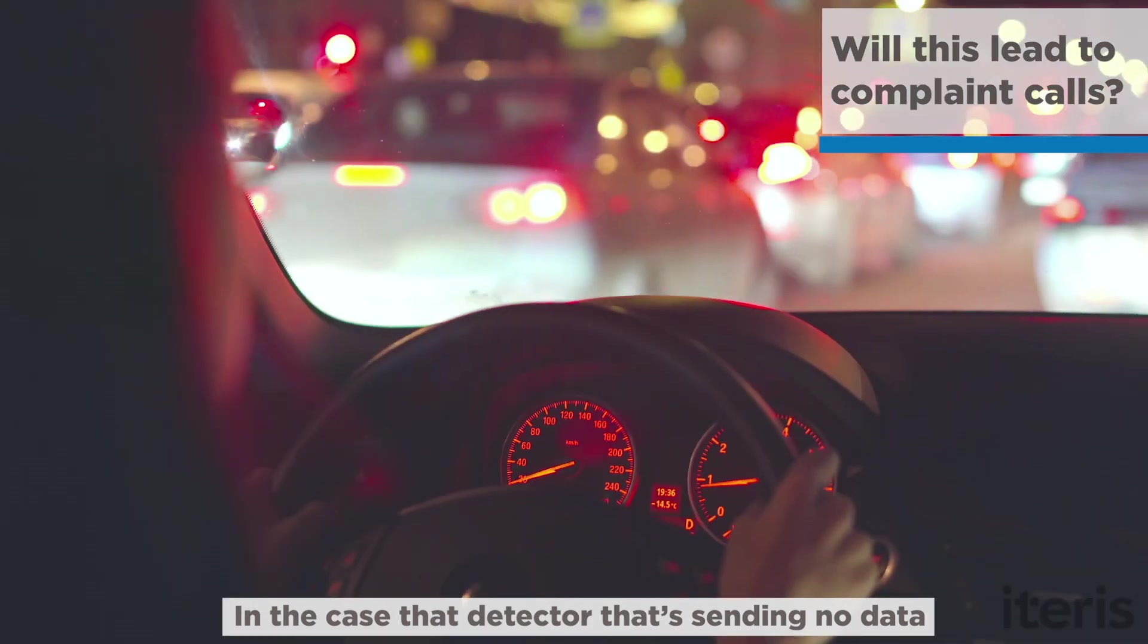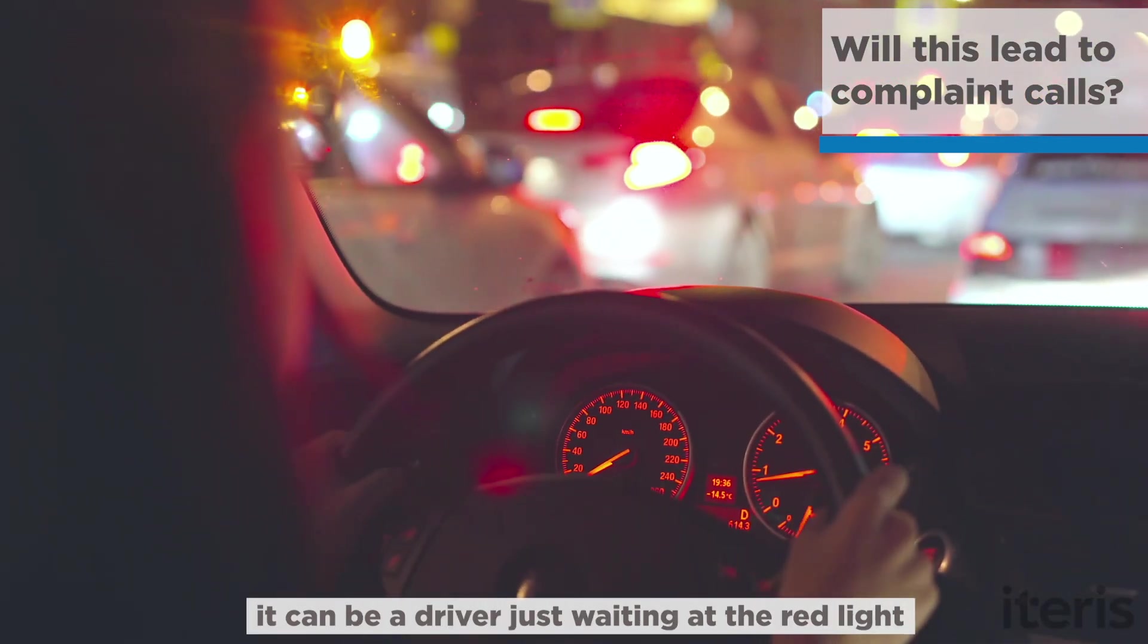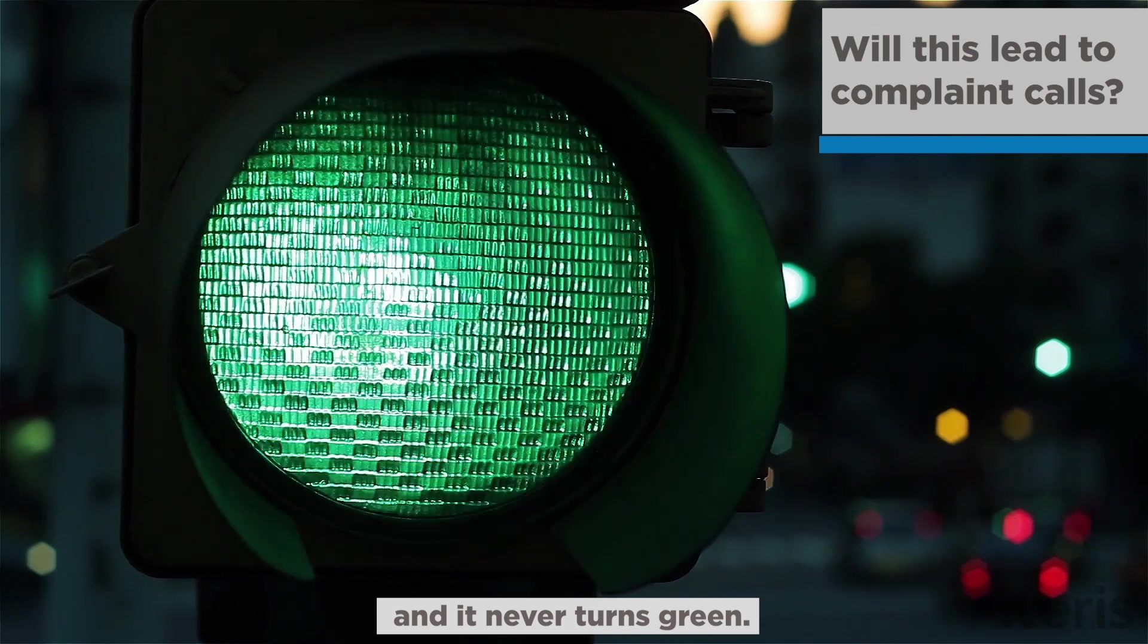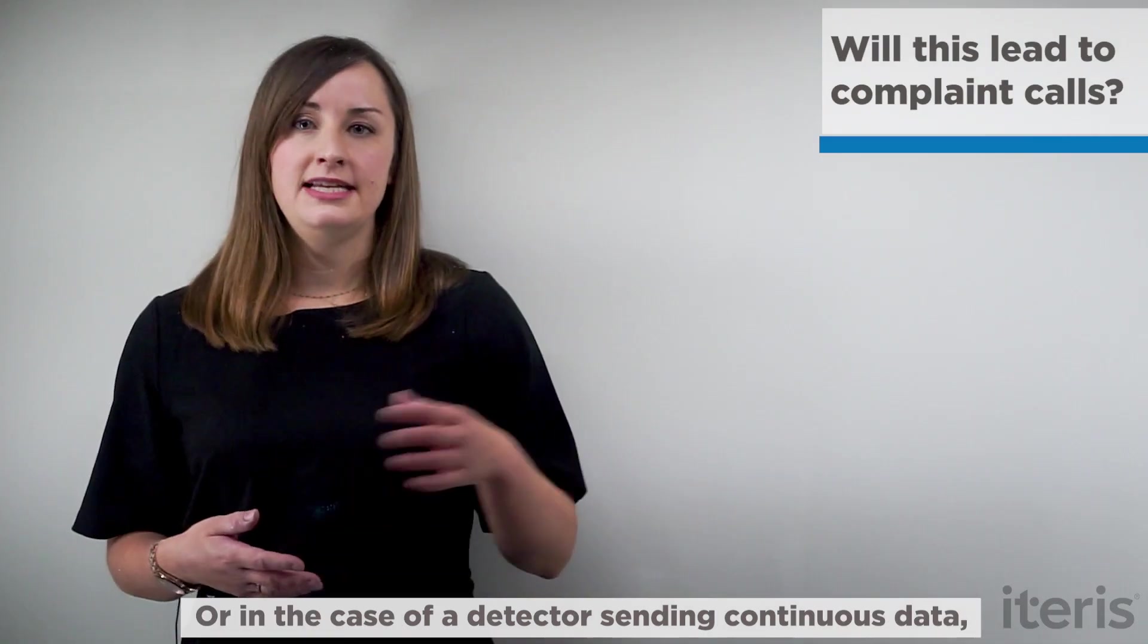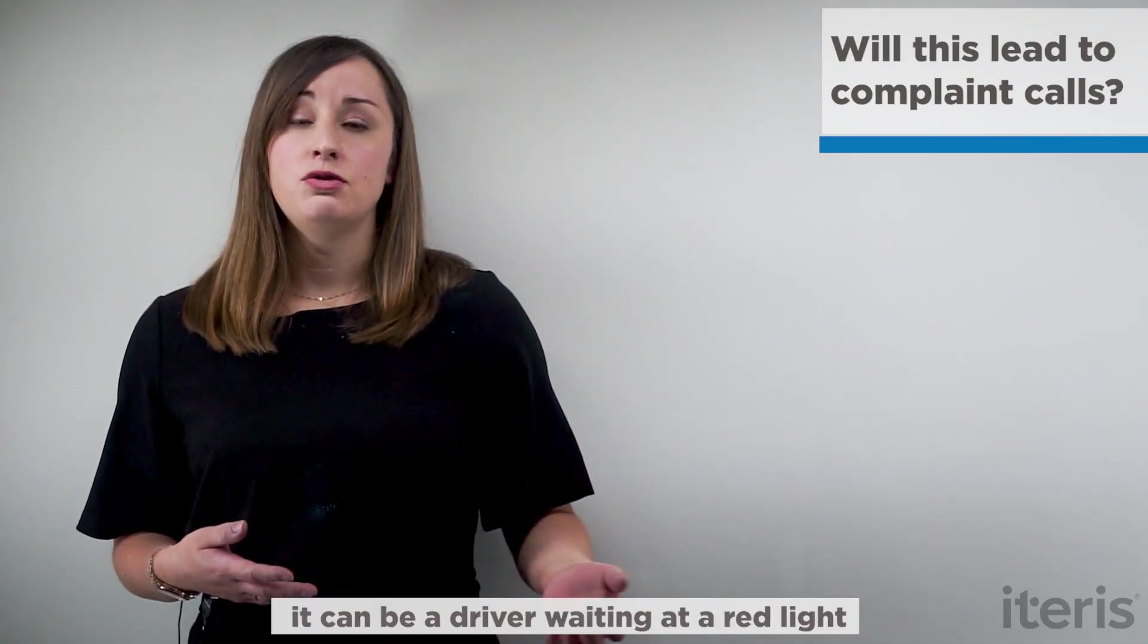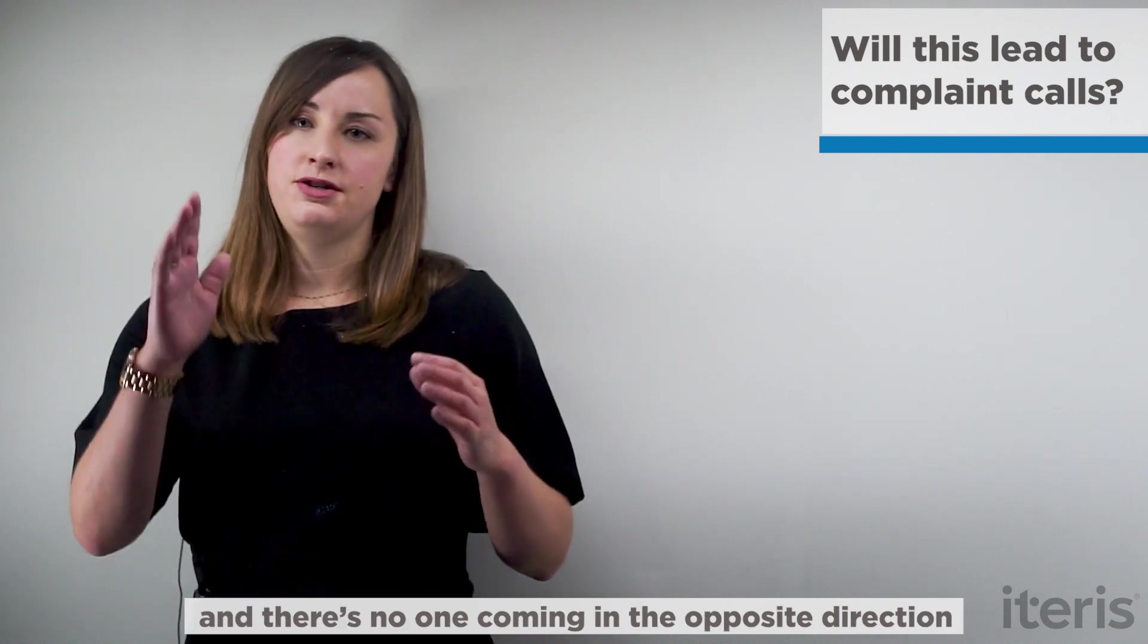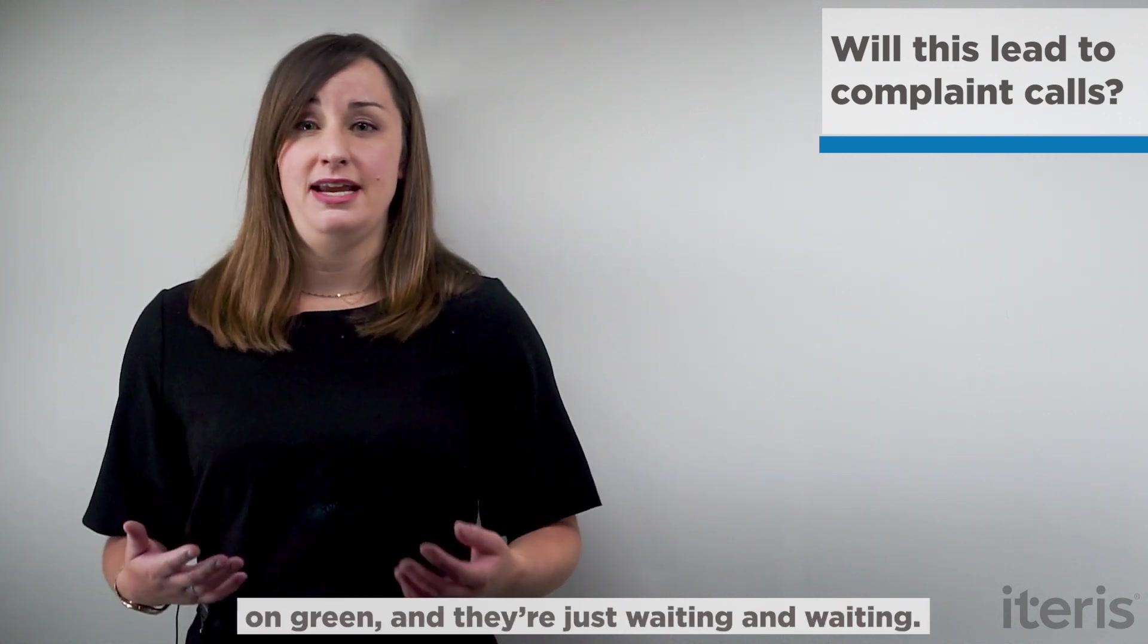In the case of a detector that's sending no data, it could be a driver just waiting at the red light and it never turns green. Or in the case of a detector sending continuous data, it could be a driver waiting at a red light and there's no one coming in the opposite direction on green and they're just waiting and waiting.